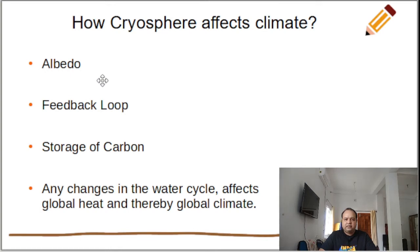Albedo: snow and ice have high albedo, meaning they reflect much of the incoming solar radiation, which helps in the cooling of the Earth. Thus, the presence or absence of snow and ice affects the heating and cooling of Earth's surface.